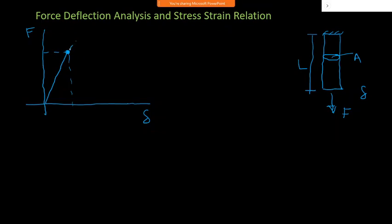Beyond the elastic limit, the curve deviates from the straight line and goes toward a failure point. This failure point represents the maximum amount of force the material can sustain. In practice, we can't directly measure stress, so we need to normalize the curve.